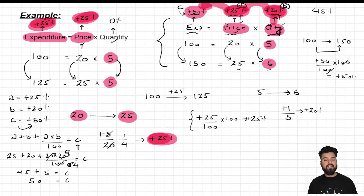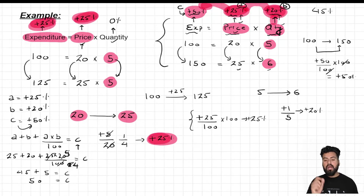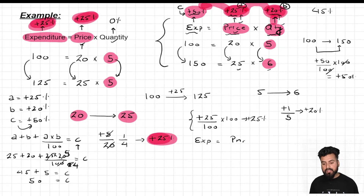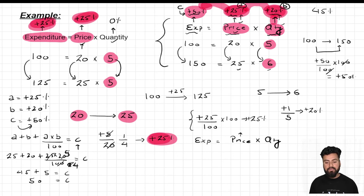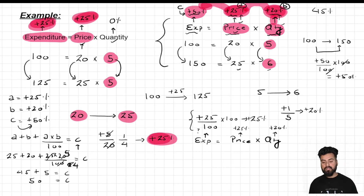After listening to this solution, some of you must be thinking: to apply Successive Percentage Change, we have also learned the multiplication factor method. Can I apply that second approach here? The answer is yes. Let me show you how. The setup is: expenditure equals price into quantity. Price was increased by 25%, so the multiplication factor is 125/100. Quantity was increased by 20%, so the multiplication factor is 120/100.